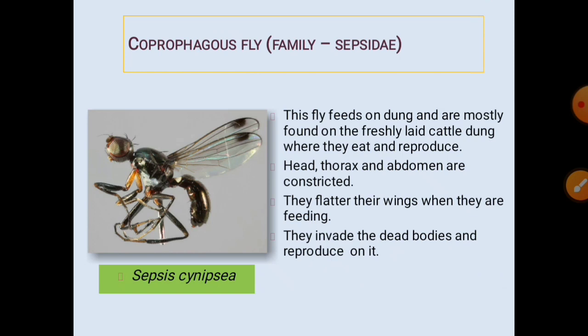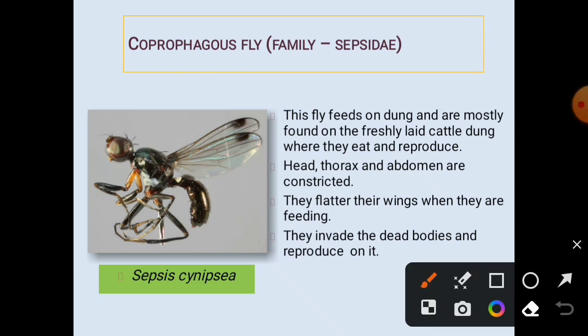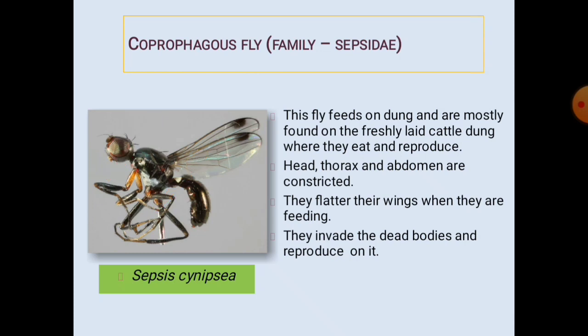Coprophagous flies from the family Sepsidae, order Diptera: 'coprophagous' means dung-feeding. These flies feed on dung and are mostly found on freshly laid cattle dung where they eat and reproduce. The head, thorax, and abdomen are constricted. They flutter their wings while feeding — this is a characteristic feature to identify them. They invade dead bodies and reproduce on them; an example species is Sepsis synipsia.